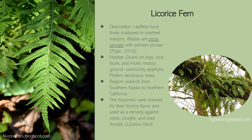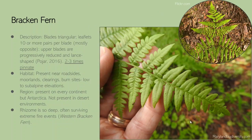Licorice ferns tend to spread rhizomatously most often — you'll often see a clumping of licorice ferns that are probably connected through one or two rhizomes extending in a couple of directions. These rhizomes are chewed for the licorice flavor and used as a remedy, as mentioned earlier. The bracken fern has a few distinct features. They typically grow really tall — they are one of the tallest fern species you'll find around here. The blades grow in sets of three, which is a good distinguishing factor, and they can be two to three times pinnate.